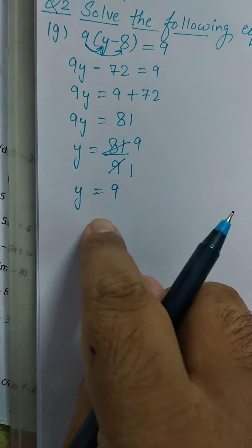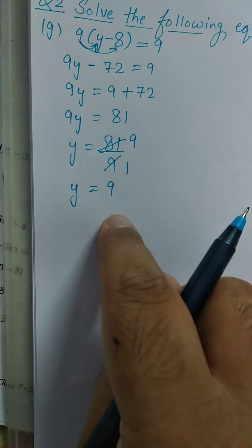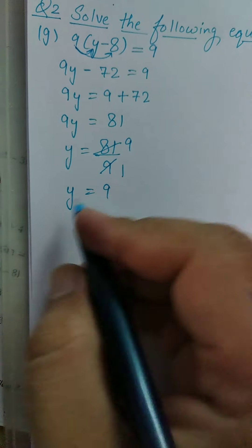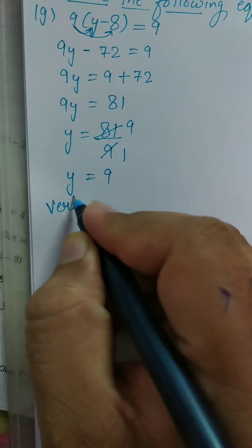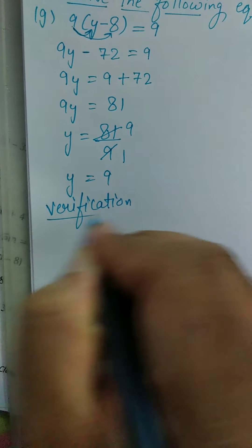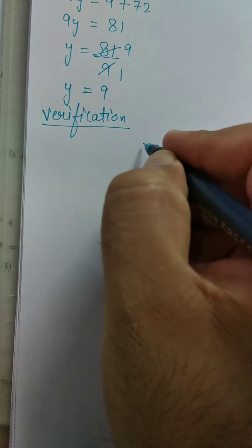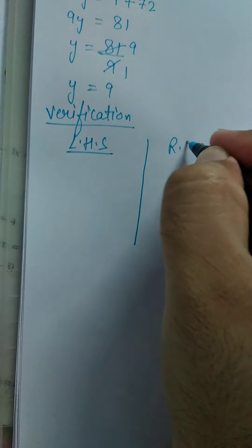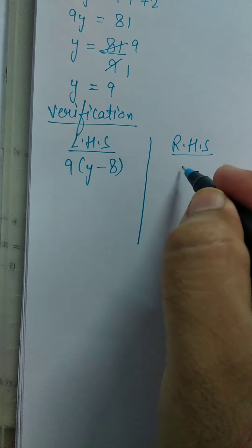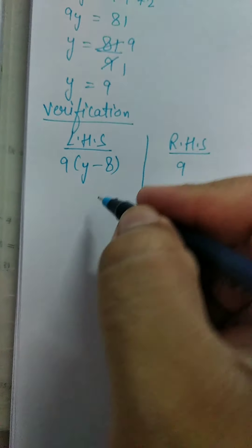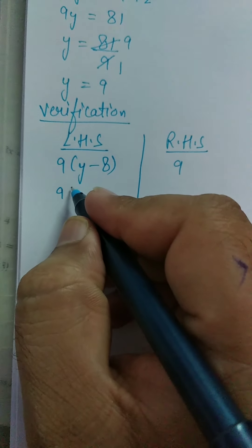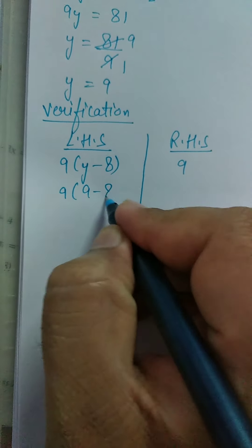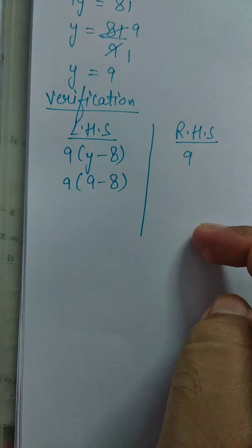Now you have to verify that your answer is correct. For this, we do verification. Make two columns — one for the LHS and one for the RHS. In LHS, you have 9(Y minus 8). In RHS, you have 9. First, solve the LHS, then come to the RHS. Put the value of Y: 9 bracket 9 minus 8.